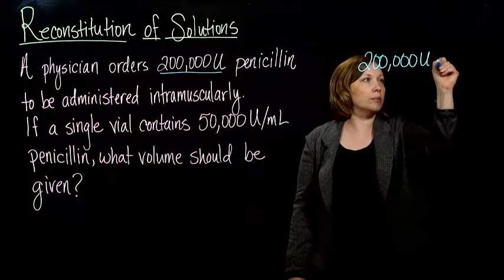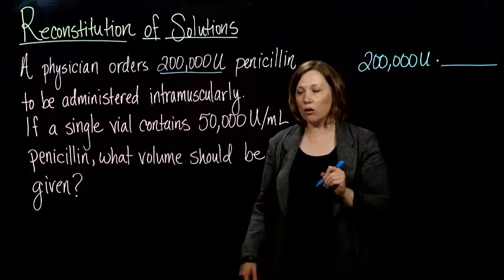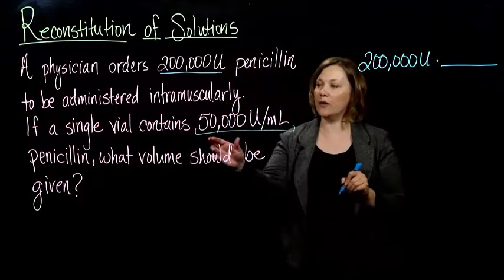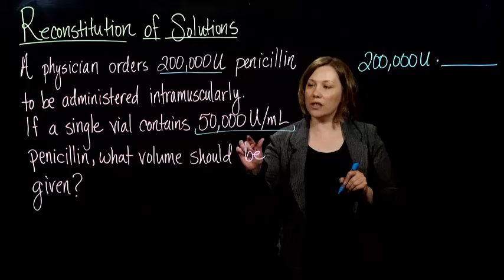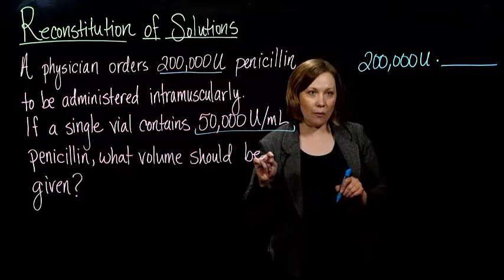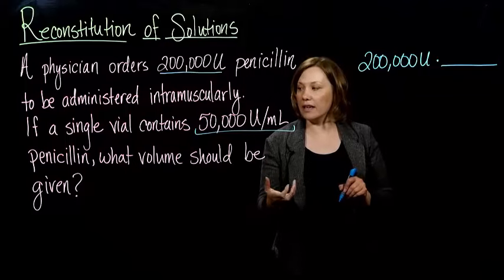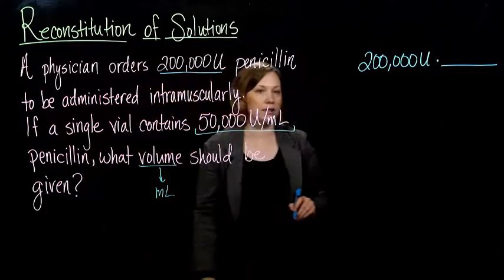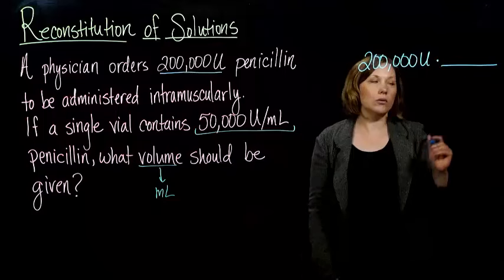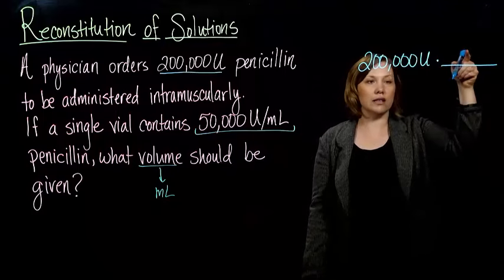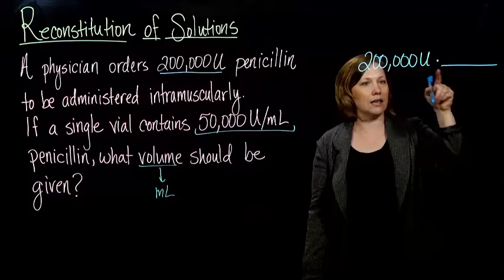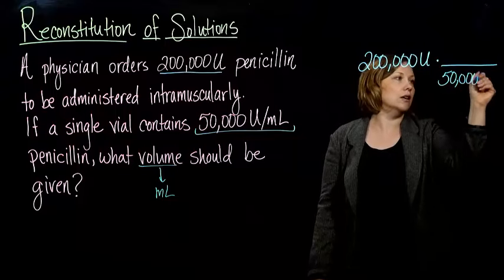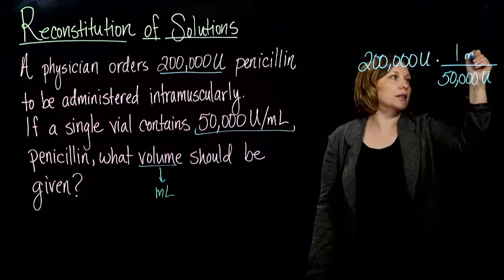Now I want to multiply by something. The vial — the medicine I have on hand — has 50,000 units per milliliter. The question is: does the 50,000 units go on the top or the bottom? We're trying to get volume in milliliters, not units. So we want milliliters on the top and units to cancel out, meaning 50,000 units goes on the bottom and 1 milliliter goes on the top.